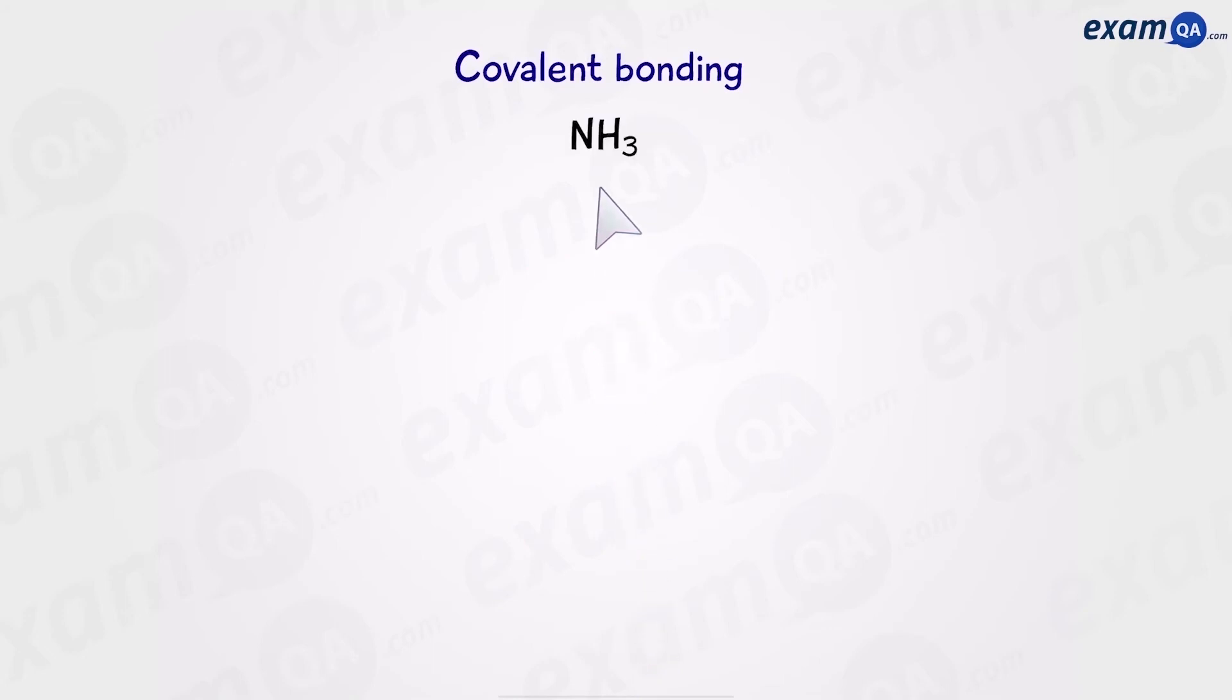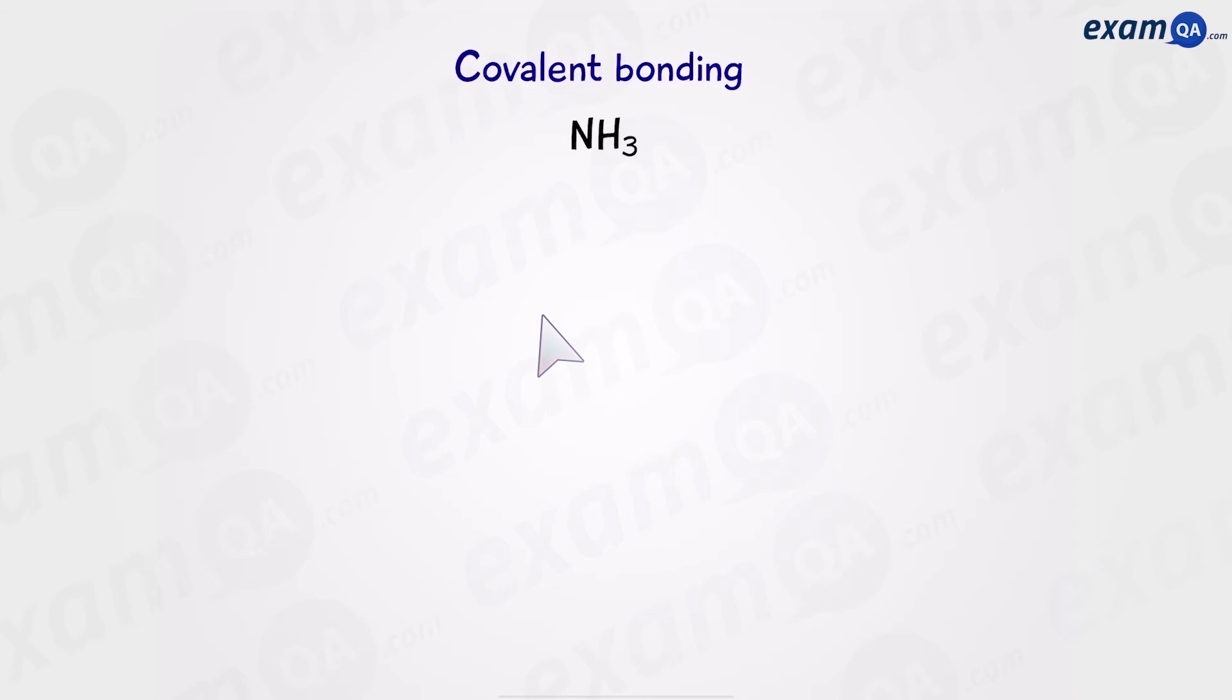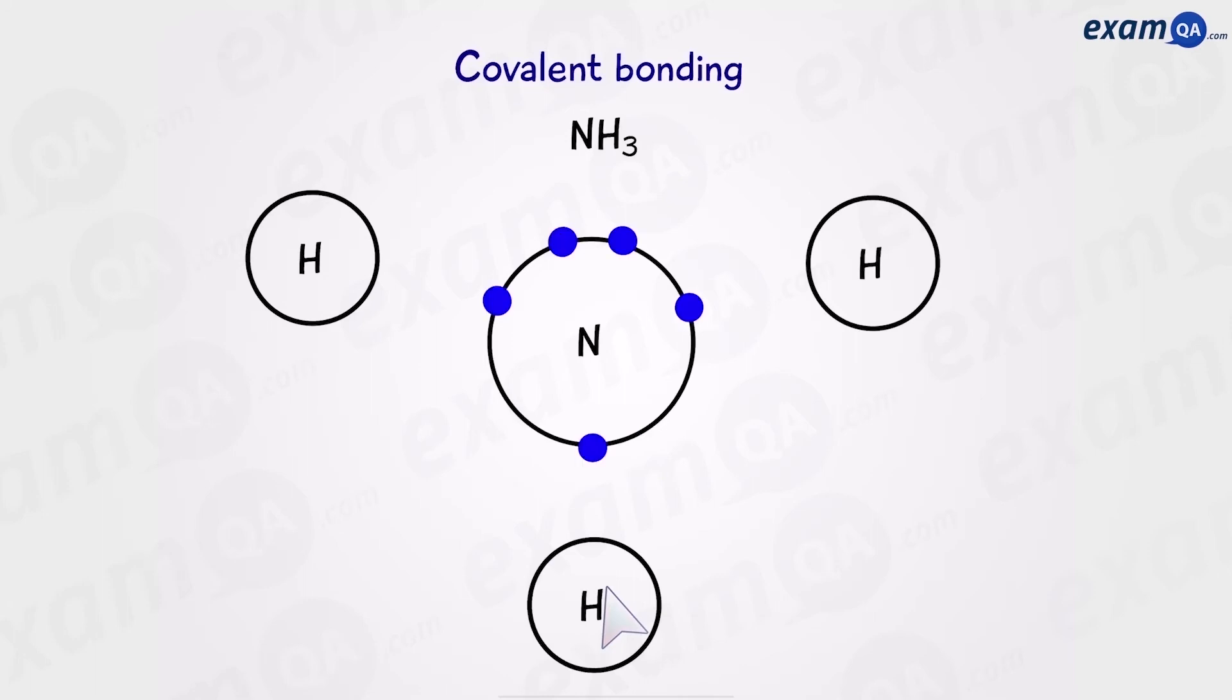Let's move on to one final example. We're going to draw ammonia. So looking at the periodic table, we can see that nitrogen is in group five. So it's going to have five electrons in its outer shell. And as for hydrogen, it has one electron in its outer shell. So we're going to have one nitrogen atom and three hydrogen atoms. Since nitrogen is in group five, we're going to put five electrons in its outer shell. And hydrogen is going to have one electron in its outer shell.